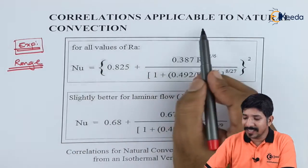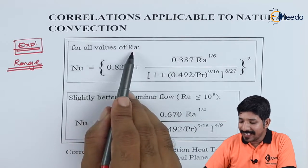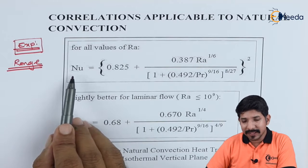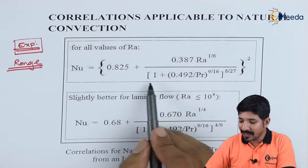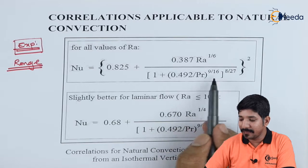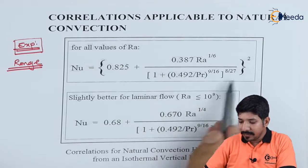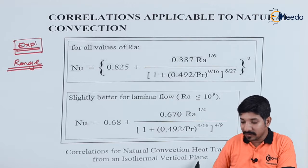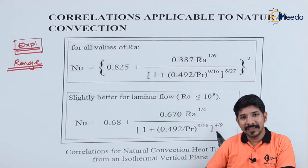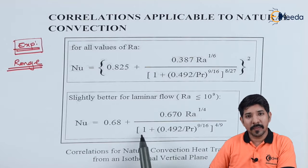Now let us look at various correlations applicable to natural convection. In this case the Nusselt number can be written as 0.82 plus 0.38 times Rayleigh's number raised to 1/6, divided by (1 plus 0.429 divided by Prandtl number raised to 9/16) raised to 8/27, and this entire expression is squared. This correlation is given for natural convection heat transfer from an isothermal vertical plate — the plate is vertical and isothermal.